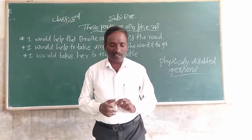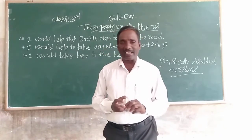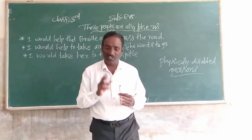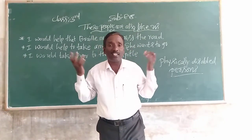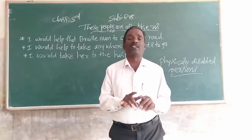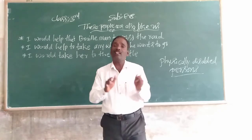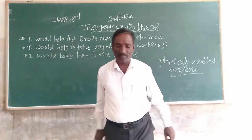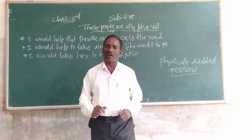Asha and Latha are friends. They are studying in the third standard. Latha cannot see — she is a blind girl. She reads books which are printed in Braille script. Blind people read and write using Braille letters. Asha sings songs well.